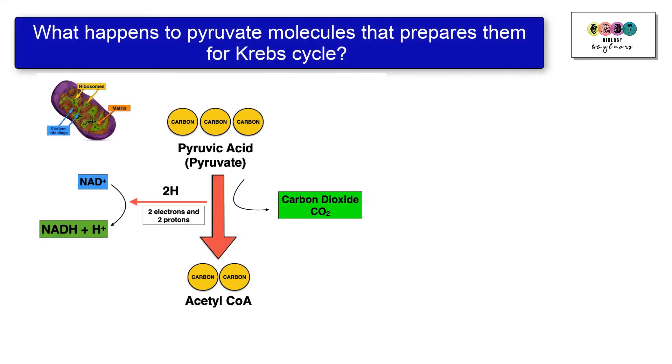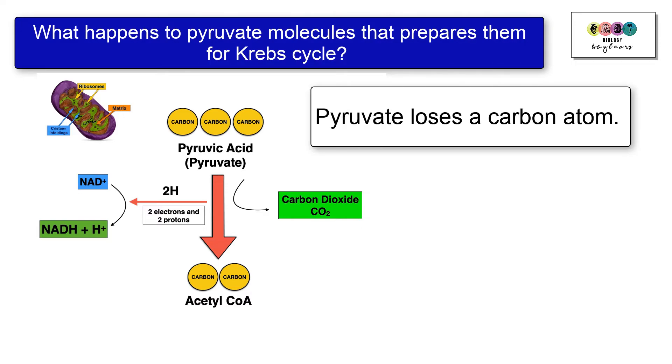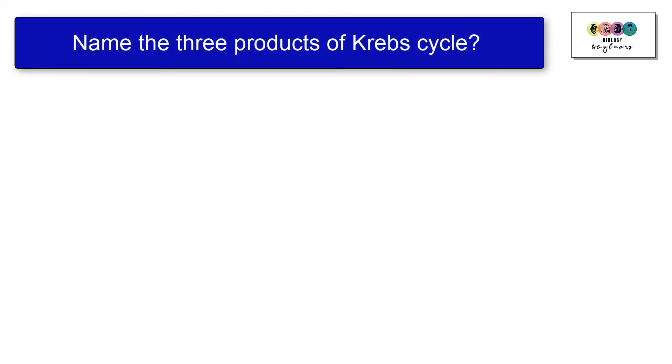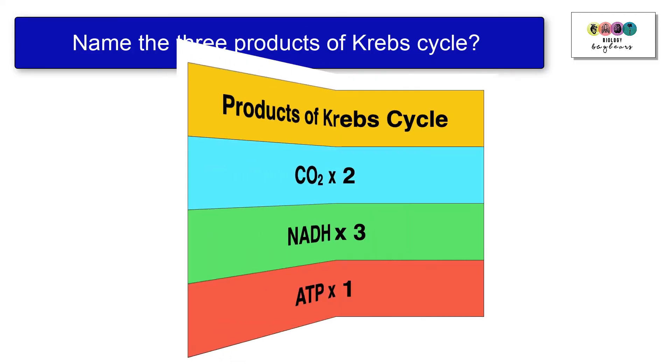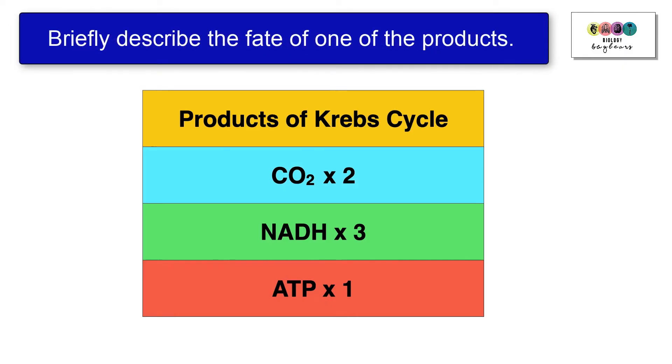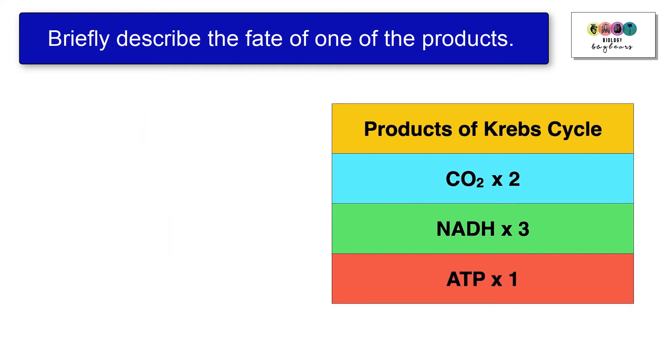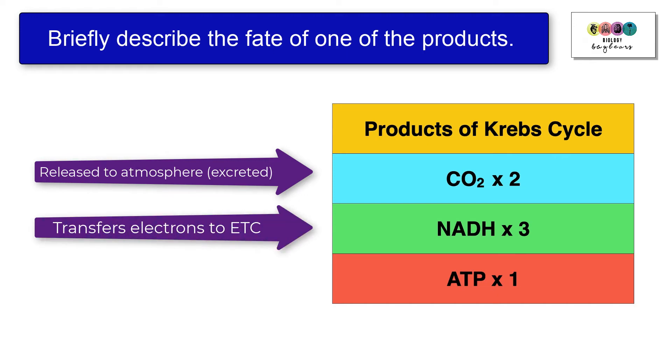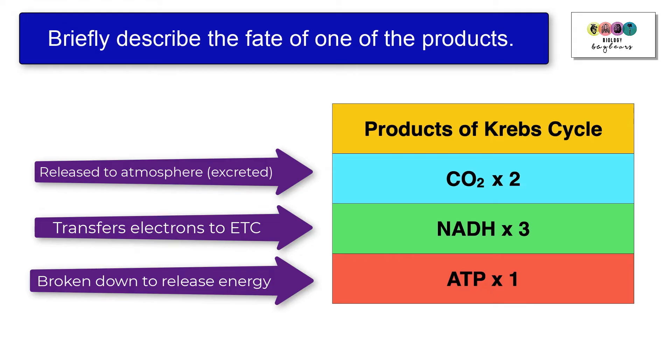What happens to pyruvate molecules that prepares them for Krebs cycle? In other words, what happens to pyruvic acid molecules that prepares them for Krebs cycle? Pyruvate loses a carbon atom, or you could state that pyruvate loses a carbon dioxide. You could also state that pyruvate is converted to the two carbon acetyl-CoA, and you know that's by the loss of a carbon, carbon dioxide. Name the three products of Krebs cycle. We have those carbon dioxides, NADH molecules, and one ATP per cycle. Briefly describe the fate of one of the products. The carbon dioxide is released into the atmosphere, the NADH transfers electrons to the electron transport chain, and the ATP can be broken down to release energy.